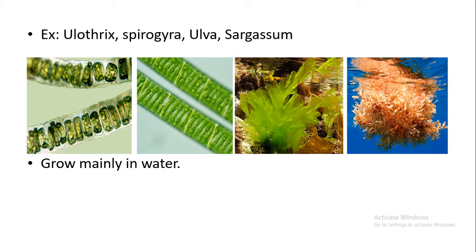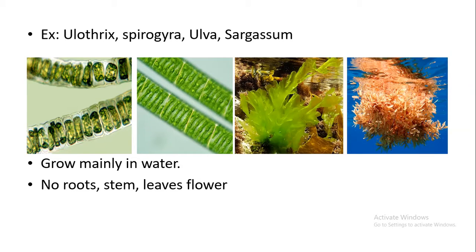The plants in Division Thallophyta mainly grow in water — either marine water or fresh water. Thallophyta means such plants which have no well-developed roots, no well-developed stems, no leaves, no flowers, but most of them are green in color. That is why they are able to do photosynthesis, and they are called autotrophic algae.